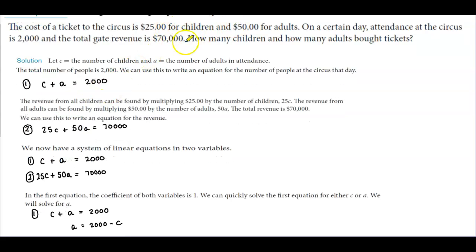Now we need to talk about the revenue. The revenue from all children can be found by multiplying $25 by the number of children, which is 25C. The revenue from all adults can be found by multiplying $50 by the number of adults, which is 50A. The total revenue is $70,000.